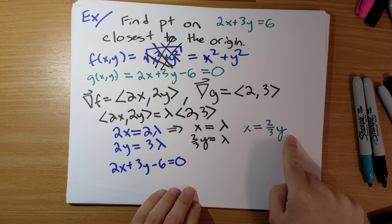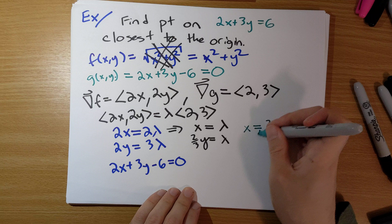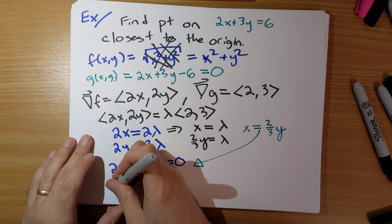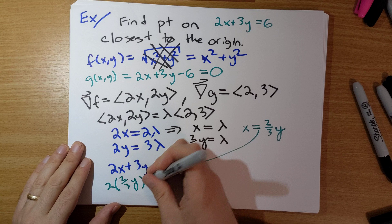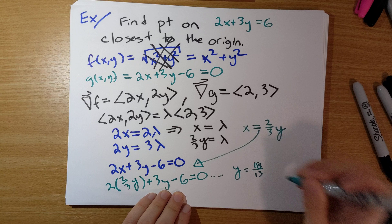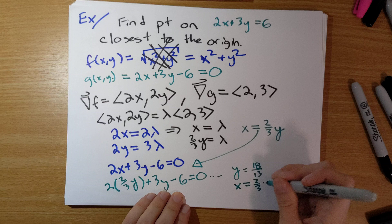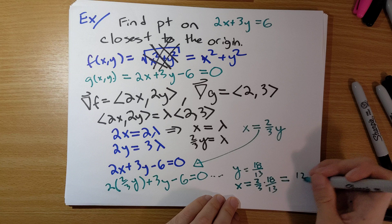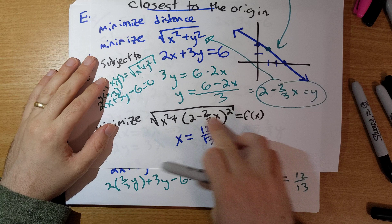To finish this off, we substitute x = 2/3 y into the constraint equation: 2 times (2/3 y) plus 3y minus 6 equals 0. Solving this gives y equals 18/13. And x equals 2/3 times 18/13, which is 12/13. That's the same answer that was asserted in our original example in the last video.